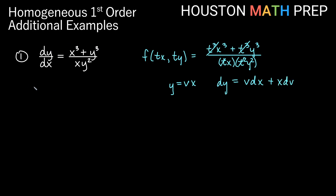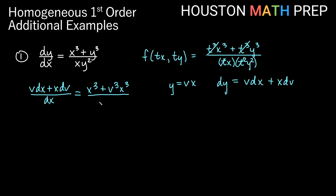We substitute all of that in: we get v dx plus x dv on top, dx on the bottom, equals x cubed plus — replacing y with vx — v cubed x cubed, over x times v squared x squared. We notice x cubed appears in all pieces, since x times x squared gives x cubed, so we reduce x cubed from everything.